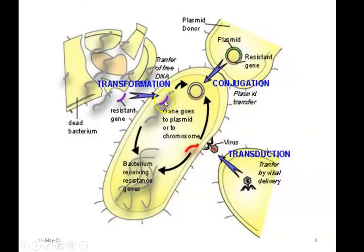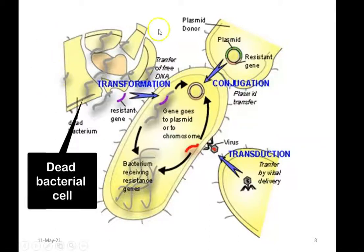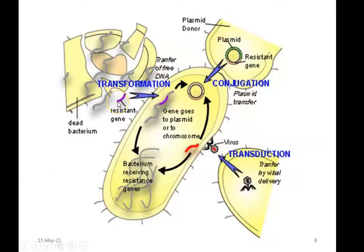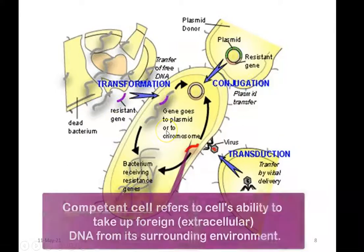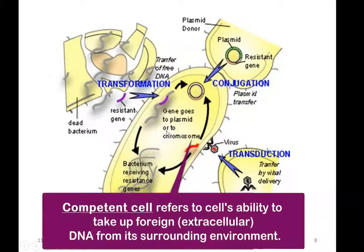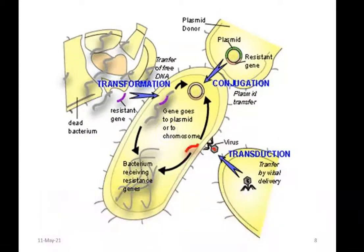The violet-colored fragment refers to a small piece of DNA that has come out from an already dead bacterial cell. This particular piece of DNA can easily enter inside a competent cell. This is a process by which resistance towards antibiotics is generated in bacteria.